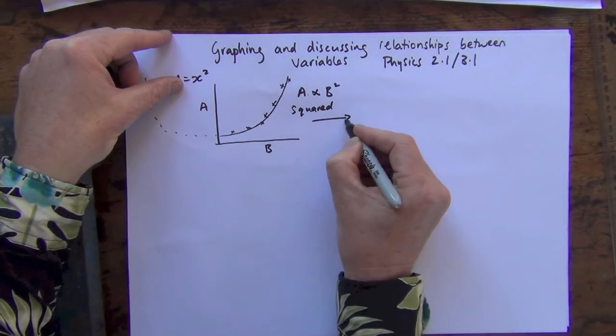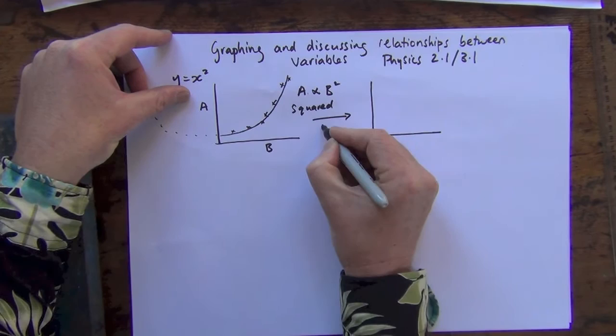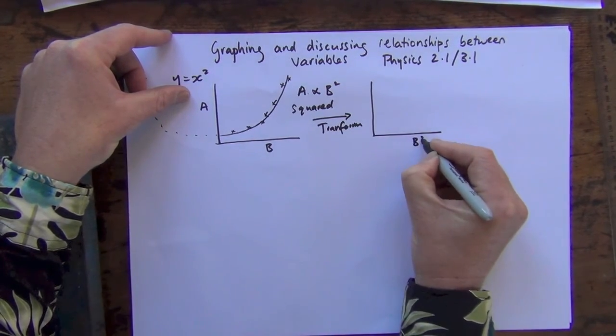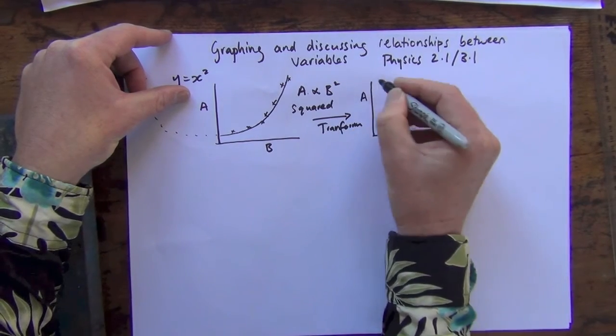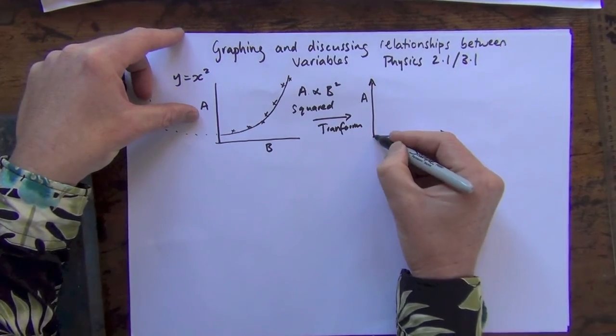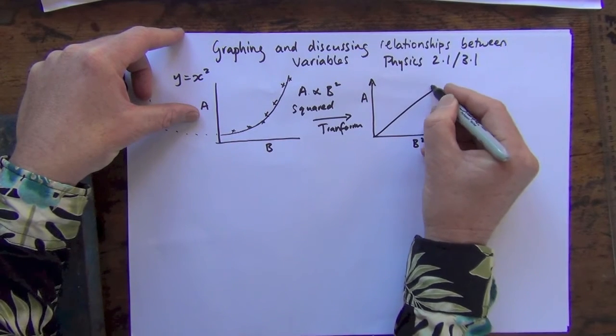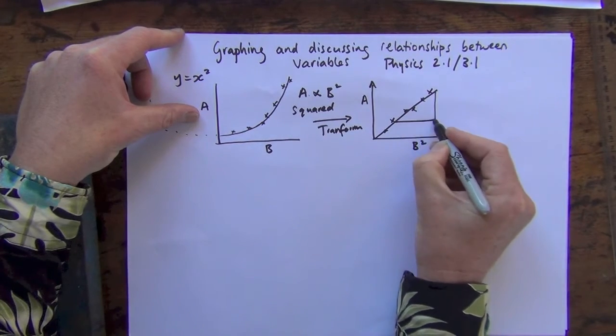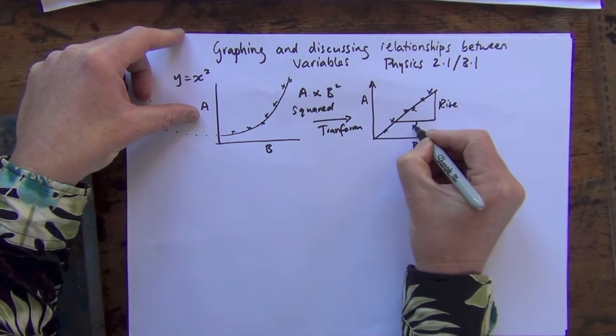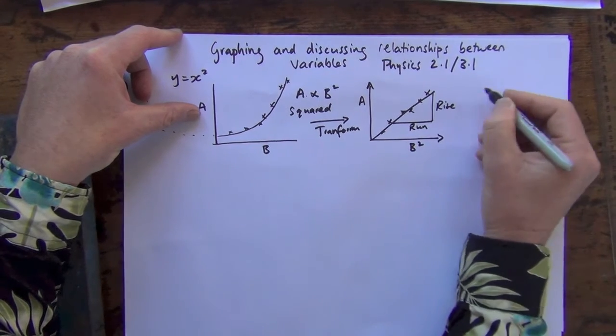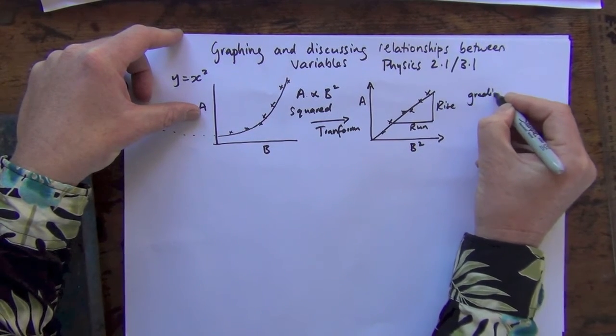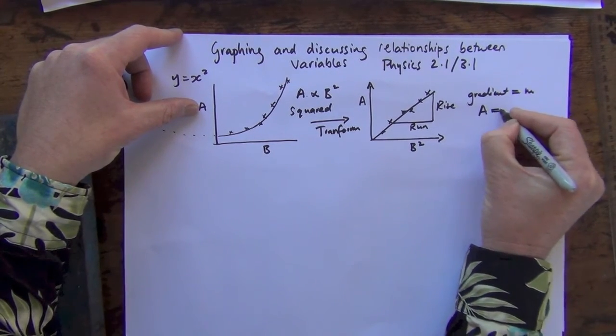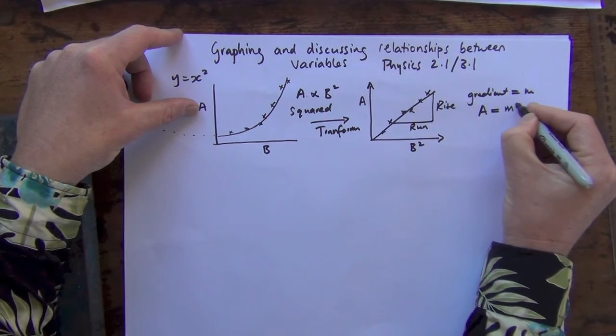And if I was to confirm that graph, and what we call transforming this graph, we would square B. So there's the transforming graph, and of course we get a straight line. And of course the slope of that straight line is the gradient, we call this, we might call this M, and therefore A equals M B squared.